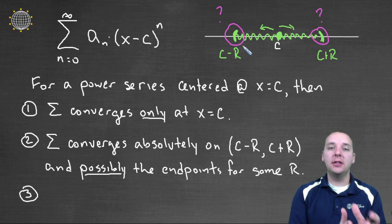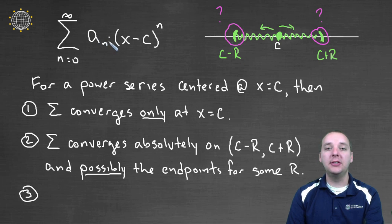It could converge at the left endpoint, but diverge at the right endpoint. It might converge at both, it might diverge at both. So you literally have to take these x's, plug them into your series, and see if that particular series converges or not.